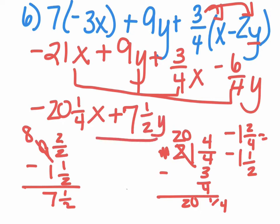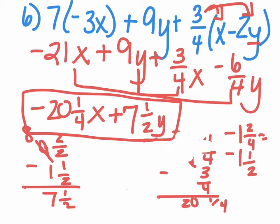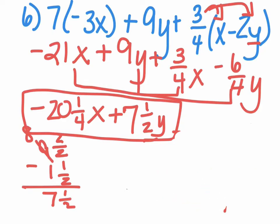So I have plus 7 and a half y. So here is my final answer. Now if you missed 5 or 6, go ahead and go to the back side of your formative assessment and try to do those. I hope you do a great job. Thanks.